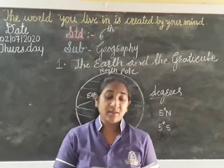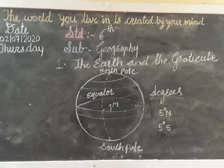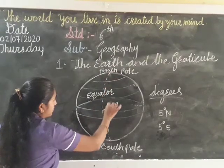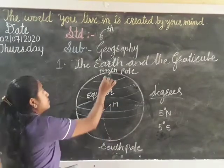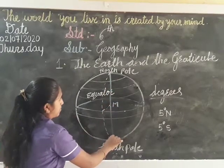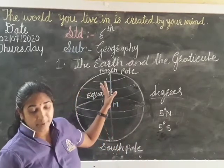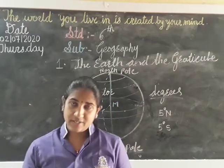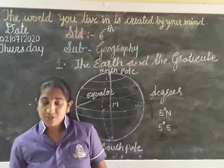There is a given 0 degree prime meridian. What is the prime meridian? The equator is a horizontal line, but the line going from the center vertically — this is called the prime meridian. The prime meridian is at 0 degree.